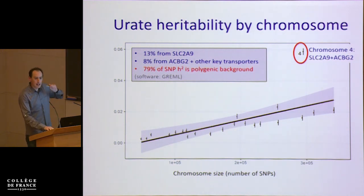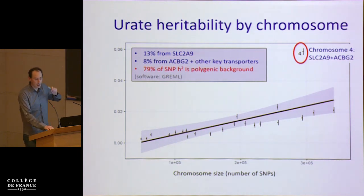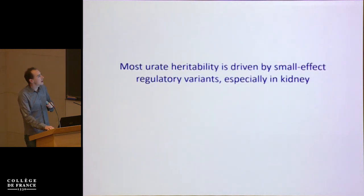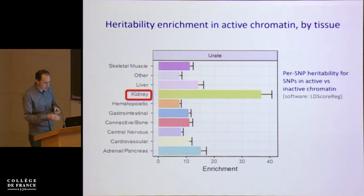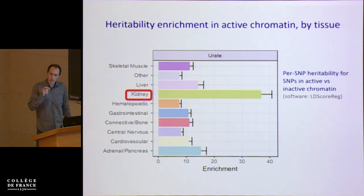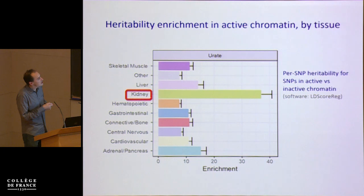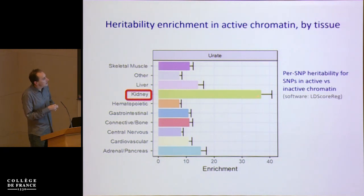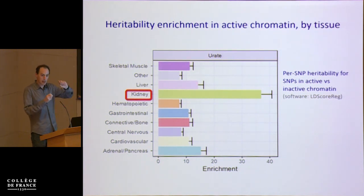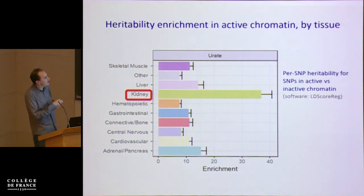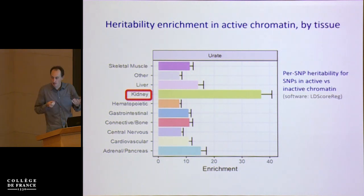An important point is that, like other complex traits, most of the heritability is driven by regulatory variants. In the case of urate, it's coming mainly from kidney — this plot shows the enrichment of SNP heritability for SNPs in active chromatin compared to genome-wide background, where kidney shows about a 30-fold enrichment. Other tissues show enrichment mainly because of active chromatin shared with kidney; if we condition on kidney, signals from other chromosomes essentially go away.